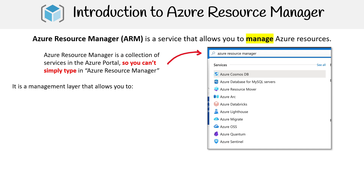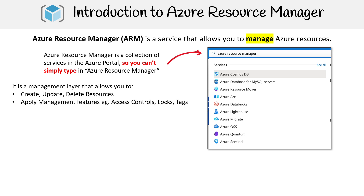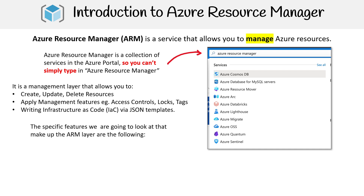It allows you to do things like create, update, delete resources, apply management features such as access controls, locks and tags, and writing infrastructure as code via JSON templates. There are very specific features we're going to be looking at that make up the ARM layer.